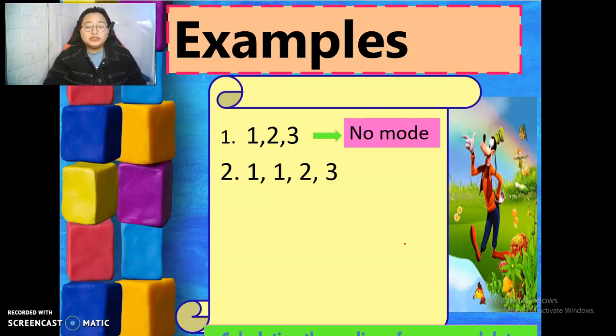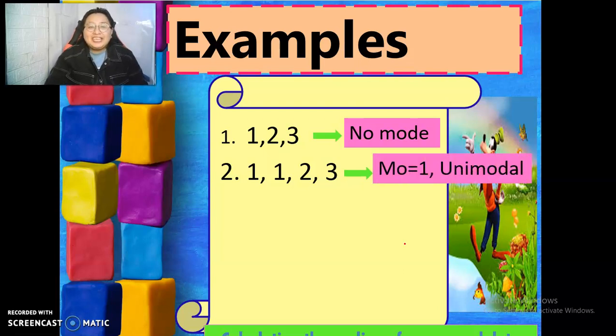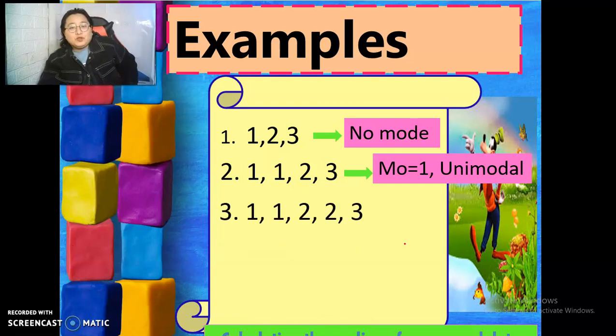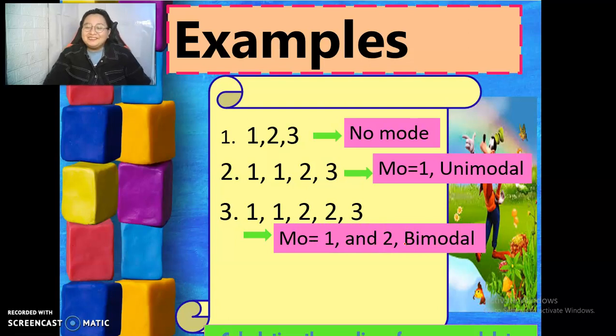Number two, 1, 1, 2, 3. What is the mode? Yes, it's one. What's the type of mode? Unimodal. How about number three? 1, 1, 2, 2, 3. Yes, the modes are one and two. And it is bimodal. Very good.